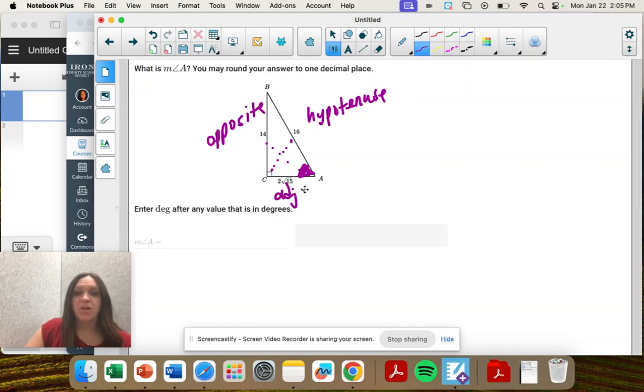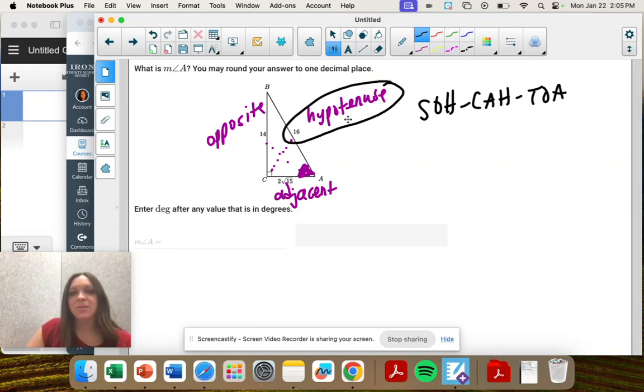So again, we have all three sides here. That means you get to pick sine, cosine, or tangent. What's your favorite? I'm going to pick sine because there's no square roots, but you're going to get the same answer whatever you pick.